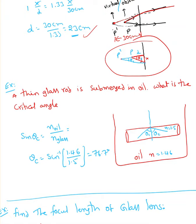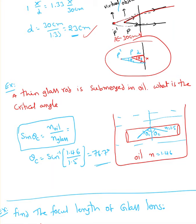The next example: a thin glass rod is submerged in oil. What is the critical angle? The oil is all around the rod. This question also didn't give n values, but you need them to find the critical angle theta_c — this is called total internal reflection. When a light ray falls onto the surface, based on theta_c, it can reflect inside the material instead of coming out. The formula is sin(theta_c) = n_oil / n_glass. Oil has n = 1.46 and the rod has n = 1.5, giving theta_c = 76.7 degrees.